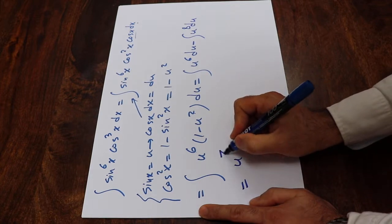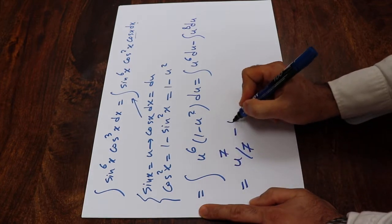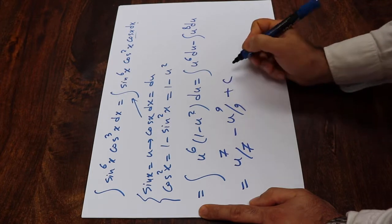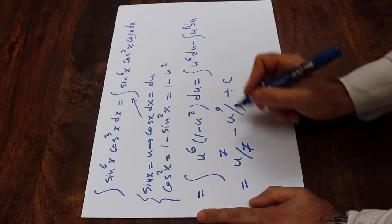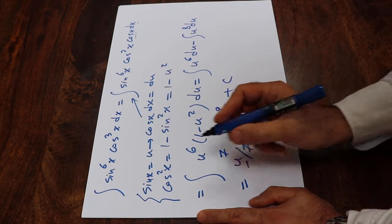And this integral will be equal to u to the power of 7 divided by 7 minus u to the power of 9 divided by 9 plus c. So all you need to do here is to substitute this parameter u with the definition of u which is sine x.